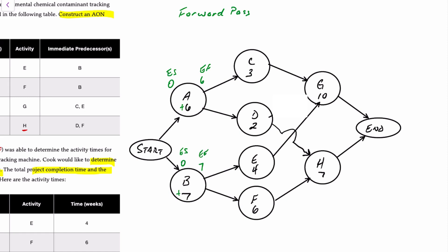Going back to activity A, both C and D come after it. The earliest finish time from activity A becomes the earliest start time for activity C — ES of six plus three equals an earliest finish of nine weeks. For activity D, that six weeks also becomes the earliest start; it takes two weeks, so the earliest finish is week eight. Looking at B, the earliest activity E can start is seven weeks; it takes four weeks, so the earliest finish is 11 weeks. F can also start in week seven; plus six weeks means the earliest it can finish is 13.